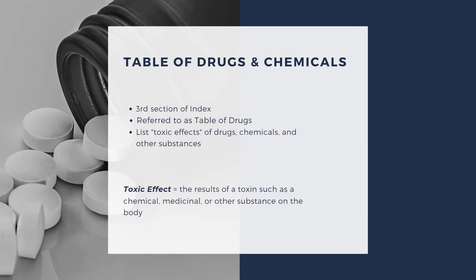The Table of Drugs lists the toxic effects of drugs, chemicals, and other substances. A toxic effect is the result of a toxin — such as a chemical, medicinal, or other substance — on the body. For example, the toxic effect of a chemical may be a burn of the skin. Toxic effect codes are unique because they do not identify the effect of the poisoning, like loss of consciousness or confusion, but rather the substance that caused the toxic effect, the intent of the poisoning, and the encounter.